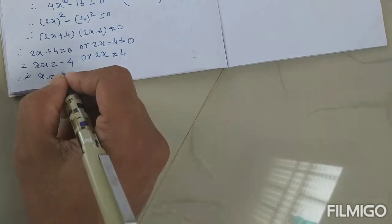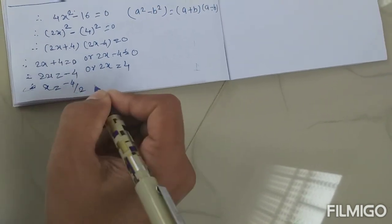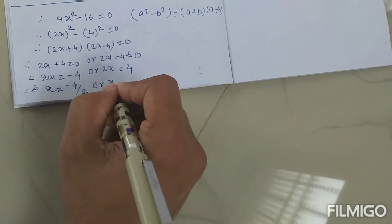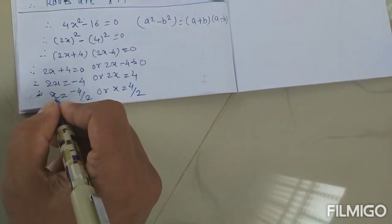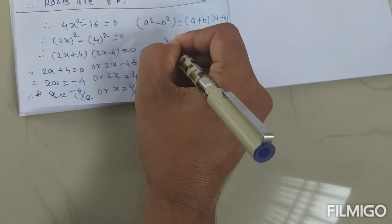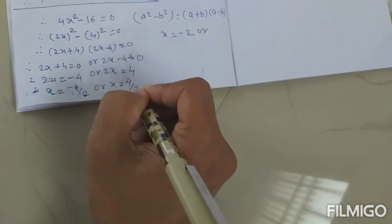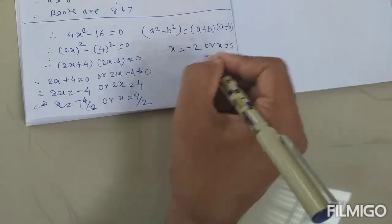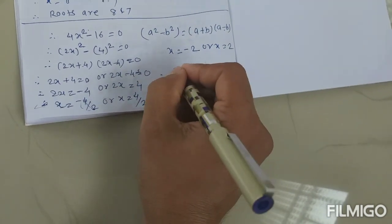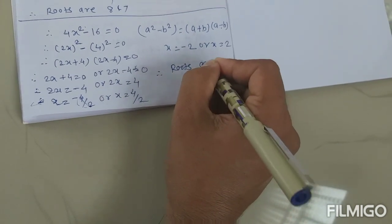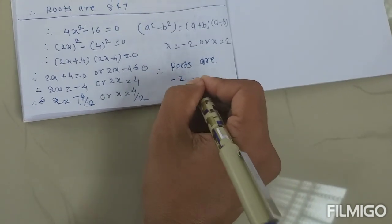Therefore x is equal to minus 4 upon 2, or x is equal to 4 upon 2. Now minus 4 upon 2 means x is equal to minus 2, or 2 into 4 means x is equal to 2. Therefore roots are minus 2 and 2.